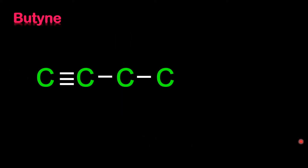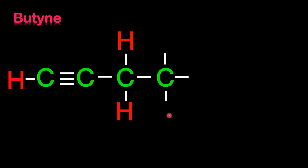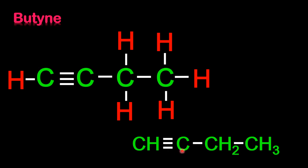Another example is butyne, again with a triple bond between the first two carbon atoms. The first carbon needs one more single bond — one hydrogen. The second carbon has three lines from the triple bond plus one single bond — four total, no hydrogen needed. The third carbon has two lines, so it needs two more hydrogens. The last carbon has one bond, so it requires three more hydrogens. The condensed formula is CH≡C–CH2–CH3.